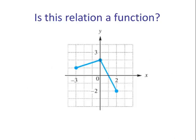Is this relation a function? Yes, it passes the vertical line test, which means for every x there is one and only one y.